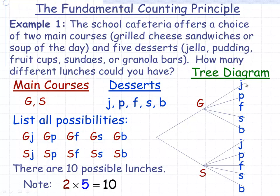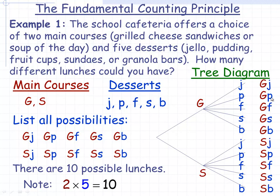This point here would represent the person selected grilled cheese and Jell-O. This one represents grilled cheese and pudding — GP. Grilled cheese and fruit cup, on down to the bottom, the last one would be selecting soup of the day and a granola bar, which is SB. These are the same possibilities we listed before. The tree diagram is just a different way to organize it, and the nice thing about a tree diagram is that it's a very organized way of doing it so you don't miss possibilities.